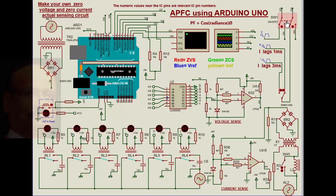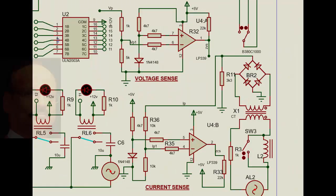Now let's come to the switch. When the switch is in this side, the actual sensing comes into picture — pulsating voltage comes here, developing zero voltage pulses. Similarly, since the supply is here, passing through the inductor and then the CT, the load passes through the CT and we get a pulsating voltage, which is compared with the comparator to give the current pulses. This is the current sense; this is the actual voltage sense.